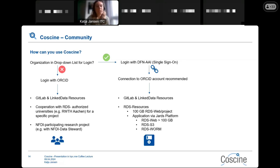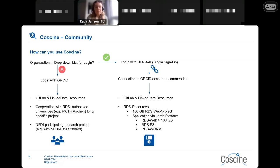If your organization is not in the dropdown, you can still log in with ORCID and create GitLab and link data resources — your data is stored outside CoSINE and only the metadata is saved in CoSINE. Another possibility is having a cooperation with an RDS-authorized university such as RWTH — they can invite you to the project and apply via YARDS for storage. A third possibility is being part of an NFDI participating research project, where you or a partner can be invited as a collaborator.